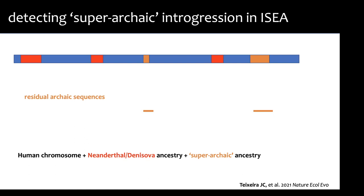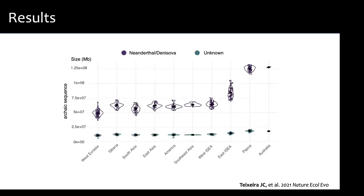We were cautious about calling these 'super archaic' since we have no direct DNA evidence for any of these groups, and these are all statistical and computational methods. Looking globally at both known and unknown archaic sequences — with populations arranged from west to east on the x-axis — we see in purple the combined Neanderthal and Denisovan ancestry. Moving east of Wallace's Line into eastern Indonesia, there's a clear jump in known archaic introgression due to Denisovan ancestry, as already known.